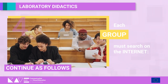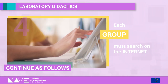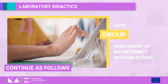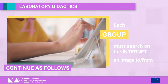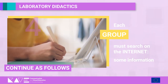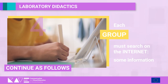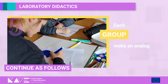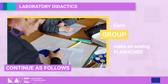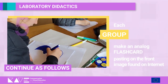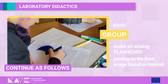Step four: each group must search on the internet via a tablet for the name of the capital, an image, and some information such as main attractions of the city, language, etc.